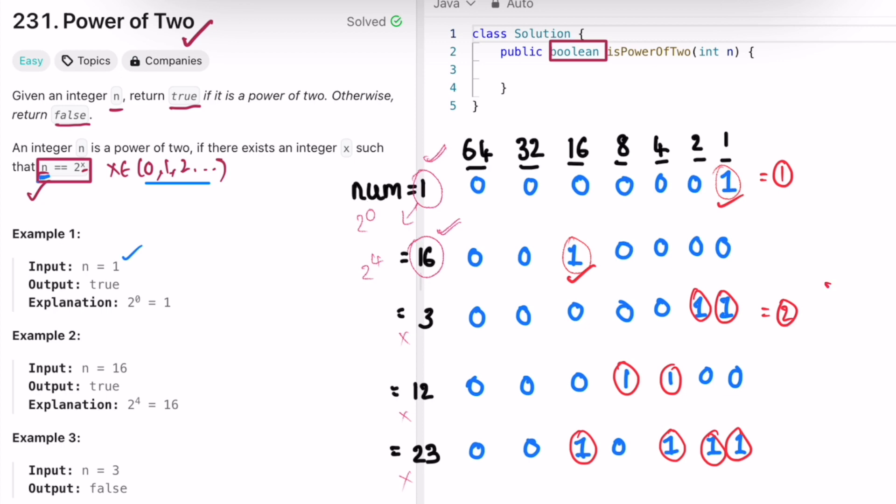Here also two bits are set which is greater than one, so it is not a power of two. Here four bits are set which is greater than one, so it's not a power of two. Only if it is equal to one, it's a power of two.